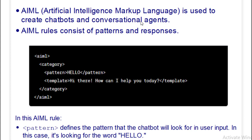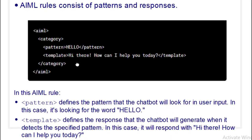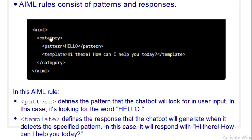AIML consists of rules which have patterns and responses. Here a simple code is given — we have the category and then we have the pattern. The pattern we have written is 'hello', and it defines the pattern that the chatbot will look for in the user input.